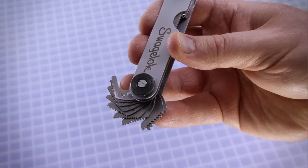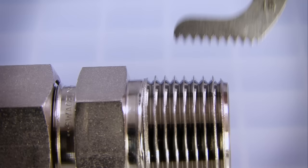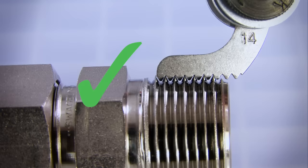The next step is to determine the thread pitch. Use a pitch gauge and check the thread against each form until you find a match. Some fractional and metric thread forms are very similar, so this may take a little time.